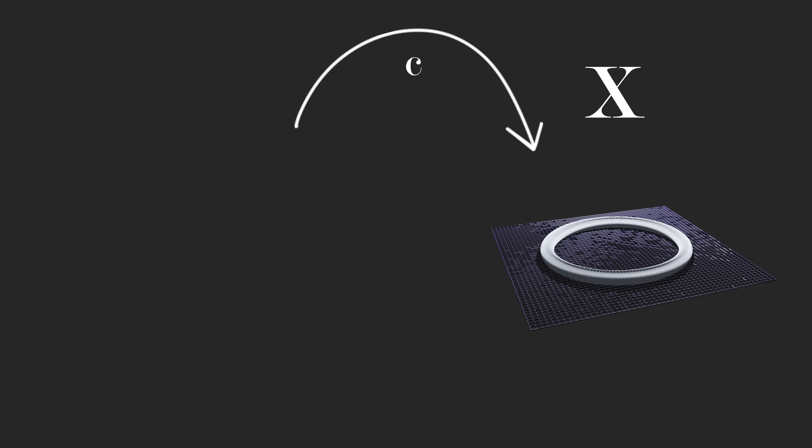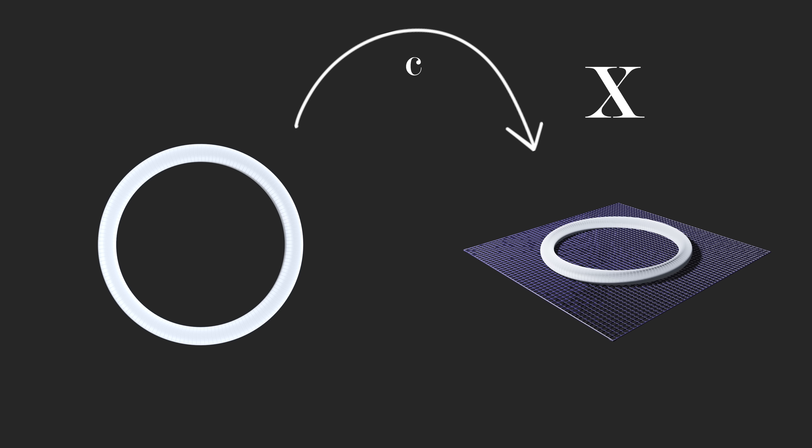Let's make this precise. Whatever space you have, let's call it x. By a loop in your space x, we mean a continuous map c from the circle to our space x.